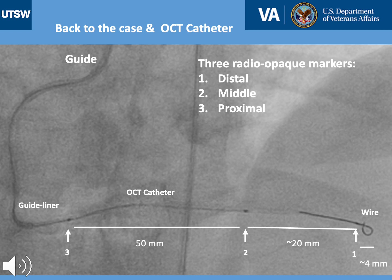In order to image the stent in the PDA, the second marker must be placed distal to the stent to visualize the distal edge, and there should be more than 25 mm of wire into the vessel to avoid the catheter exiting the wire. At this point, I don't believe the catheter had exited the wire, but it probably did at a later stage during the procedure, as I will show in the next slide.